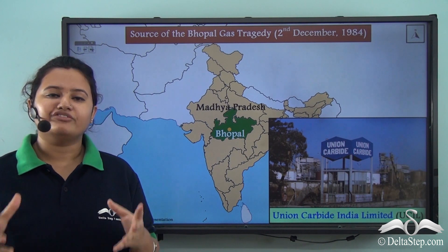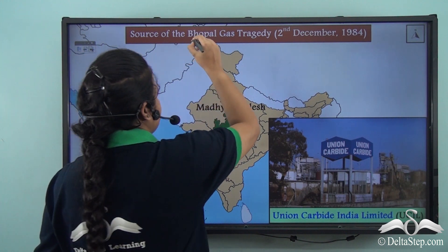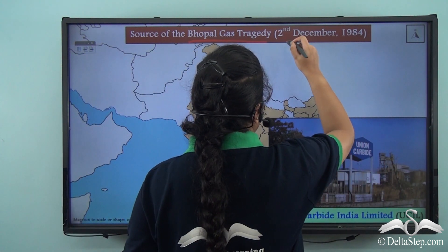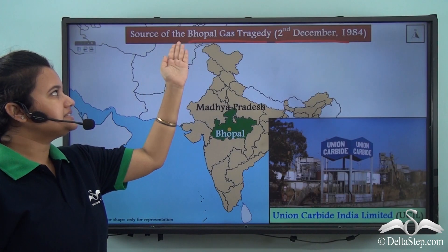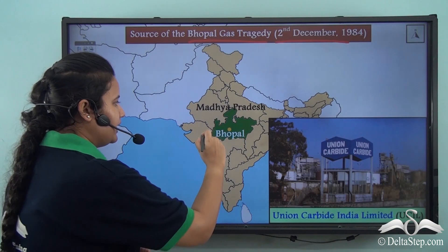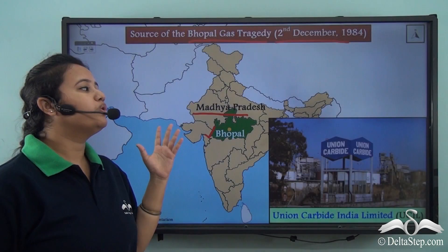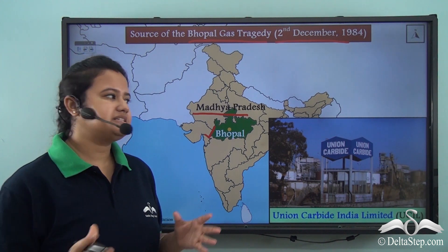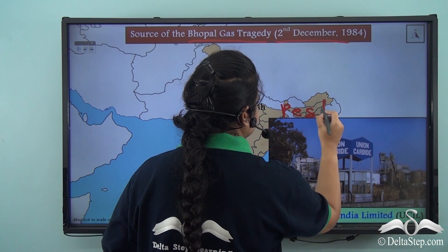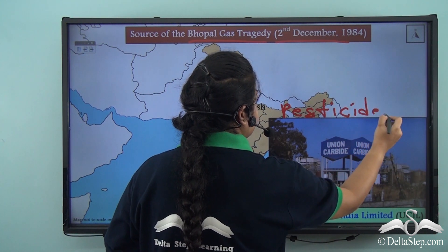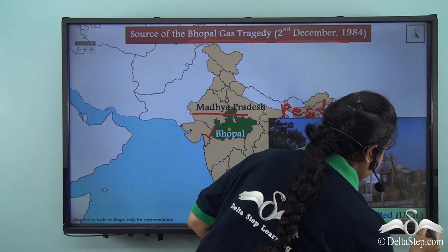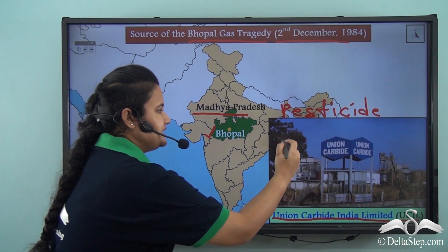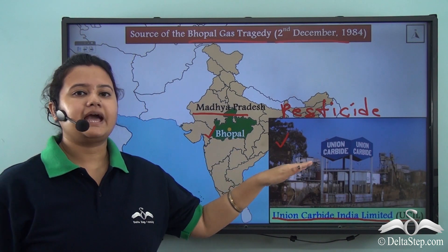We just watched a video on the fatal incident of the Bhopal gas tragedy. The incident took place on 2nd December 1984, in Bhopal, the capital city of Madhya Pradesh. The source of this disaster was an American-owned pesticide plant named UCIL or Union Carbide India Limited. This is the picture of the pesticide plant which led to the Bhopal gas tragedy.